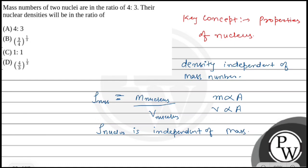If the densities are the same, the ratio ρ1 by ρ2 would be 1 is to 1.